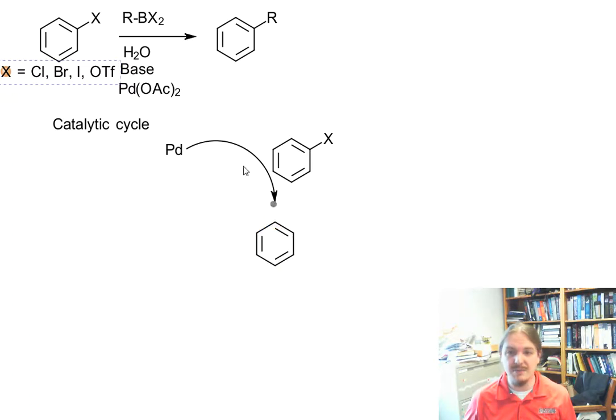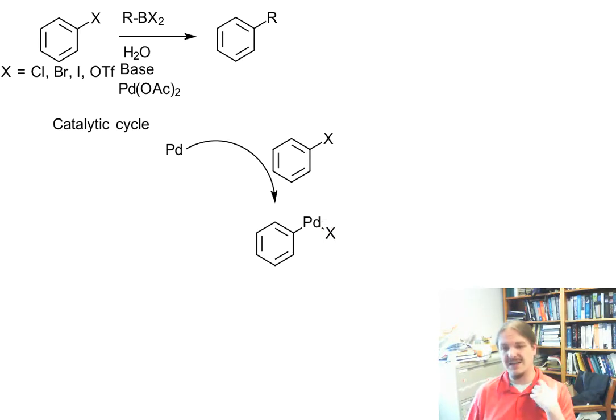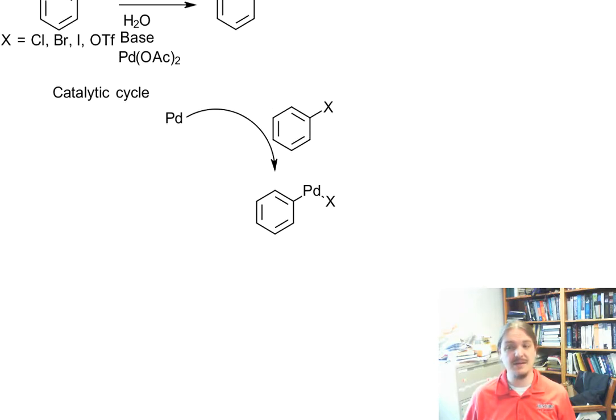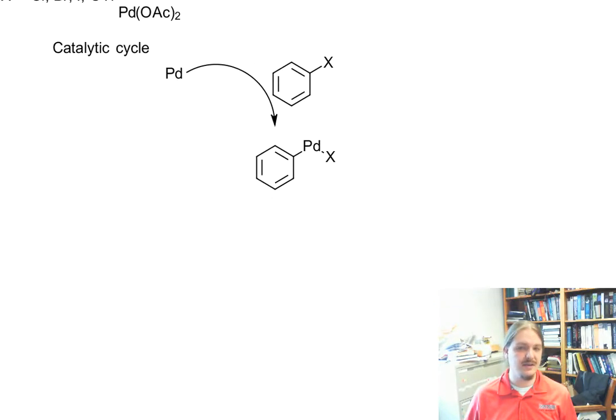And this first step is something called oxidative addition. And so palladium, somehow our palladium species gets to be palladium zero. So that means that it has no, it's in the oxidation state zero. It inserts itself into the carbon halogen bond. We've seen other metal insertions, the magnesium does this for Grignard reagents. This carbon-palladium bond is actually less polar. Palladium is only a little bit less electronegative than carbon is.